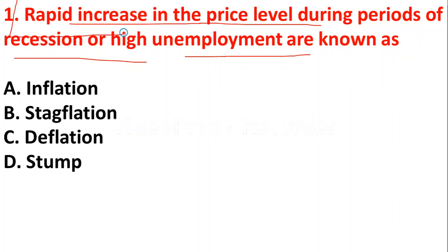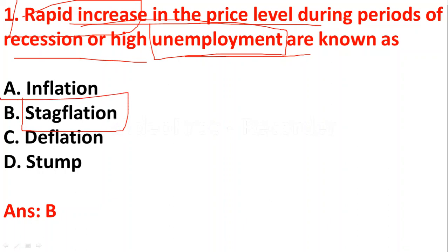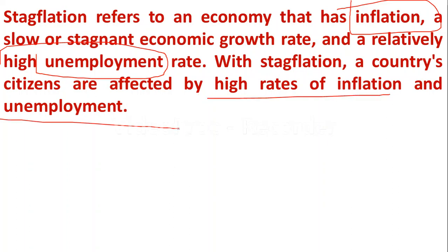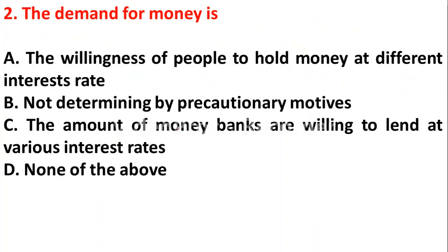When the prices of goods and services are increasing and there is also unemployment in the economy, this situation is known as stagflation. So option B, stagflation, is the right answer. Stagflation is the combination of both price rise (inflation) and unemployment in the economy. A country's citizens are affected by high rates of inflation and also unemployment — this condition is known as stagflation.